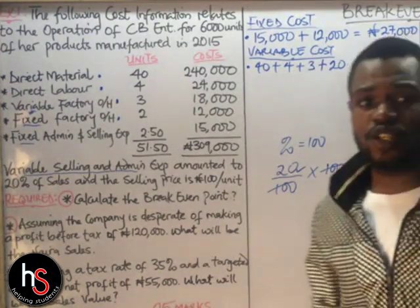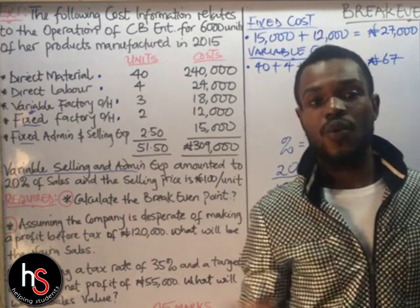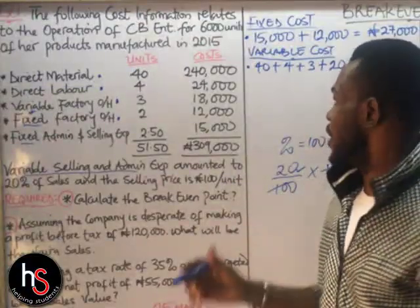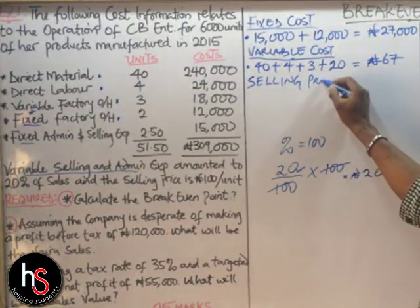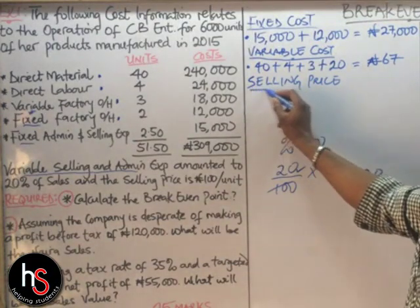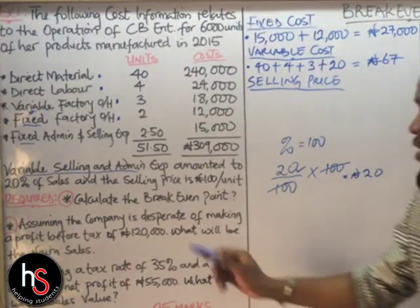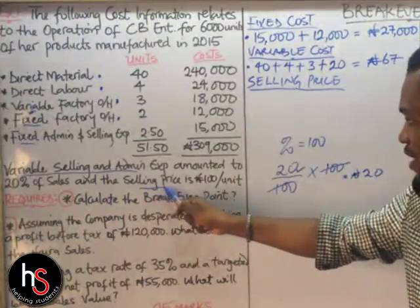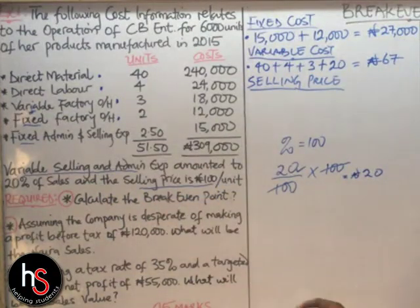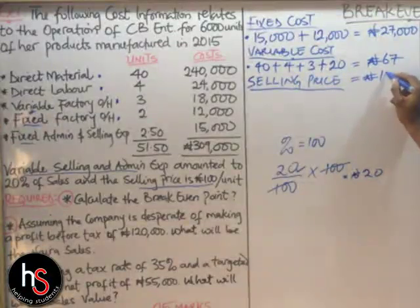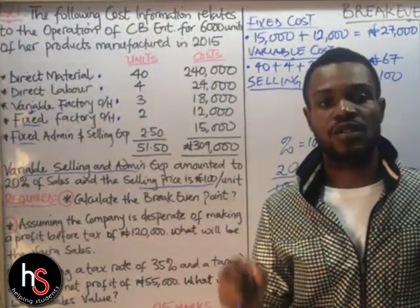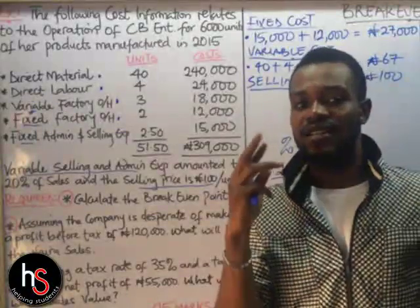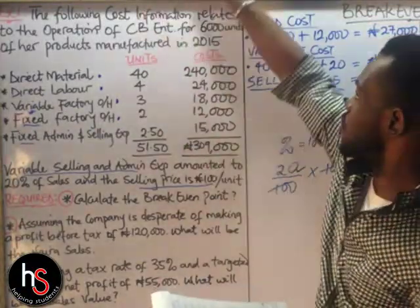The next thing we need under the breakeven analysis is the selling price. The question tells us the selling price is $100. So we now have all three values we need: fixed cost $27,000, variable cost $67, and selling price $100. Let us solve this question.